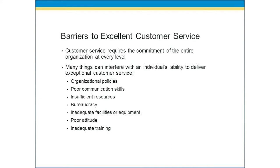Many things can interfere with an individual's ability to deliver exceptional customer service, such as organizational policies. Think about policies that might prevent a frontline customer service agent from dealing effectively with customers — for example, when a customer calls in with a challenge, but the agent is held to a standard to terminate the call and solve the problem very quickly. Sometimes policies from the organization don't really meet the customer's needs.